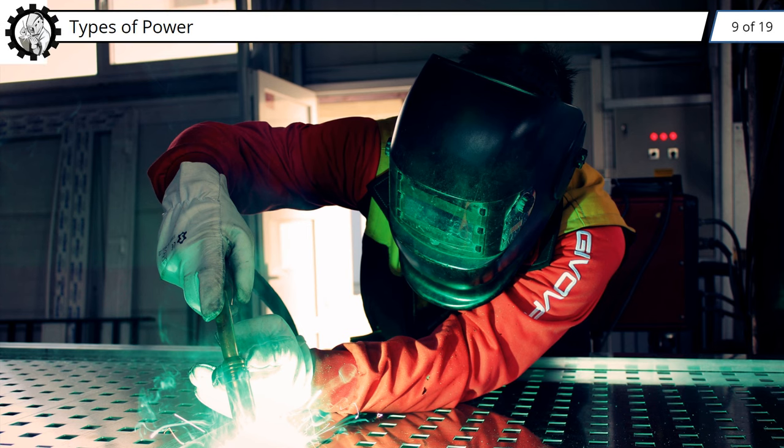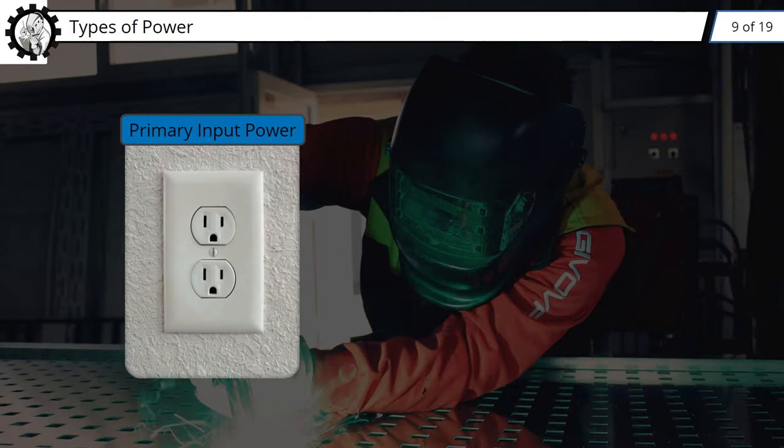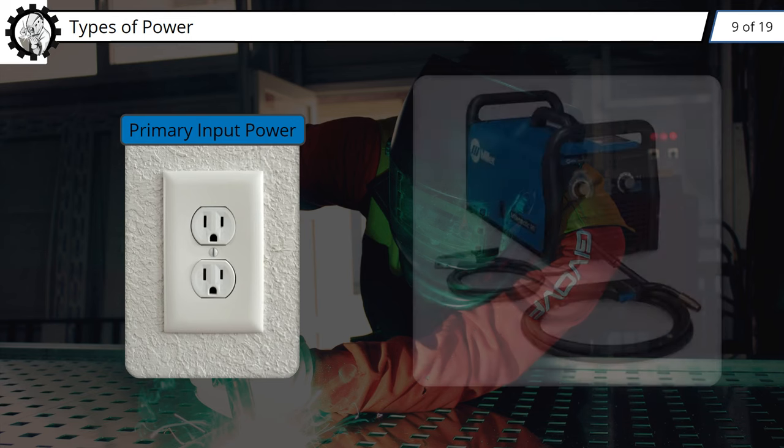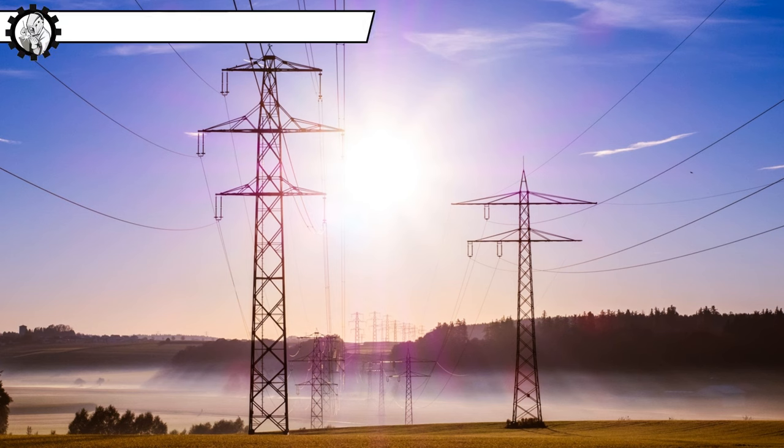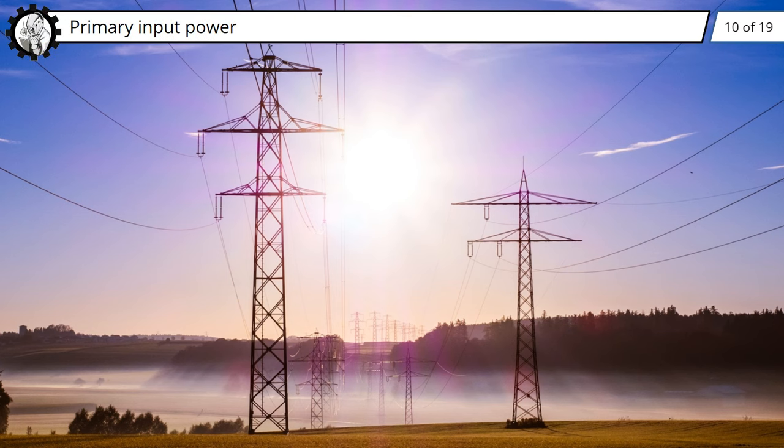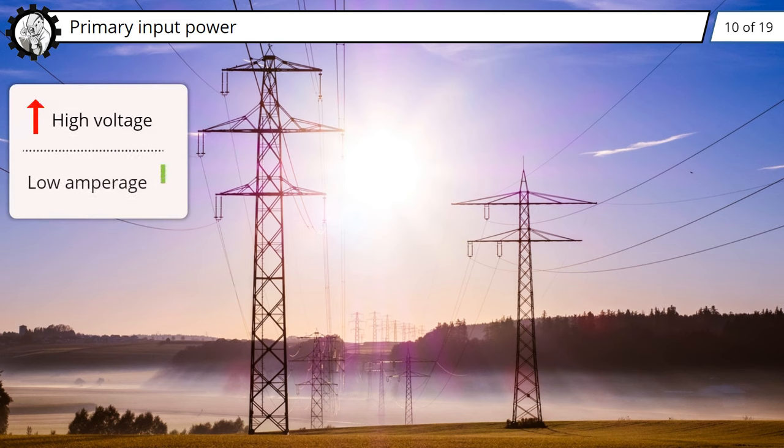When it comes to welding equipment, you'll need to understand both primary input power, or the wall power that's supplied in a shop, and secondary output power, which are the capabilities of your welding machine. Primary input power is what's supplied by the utility company or by a generator. It's supplied at a high voltage and low amperage. In the generation of electricity, the principles of magnetic repulsion and attraction are used to set electrons in motion for AC power generation.